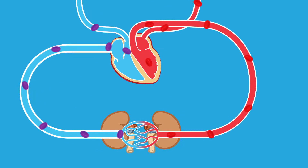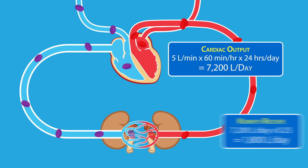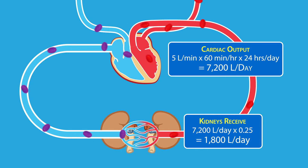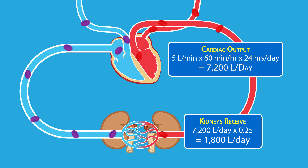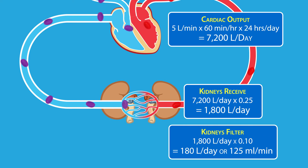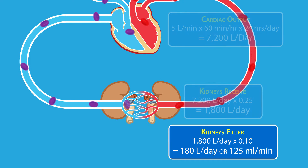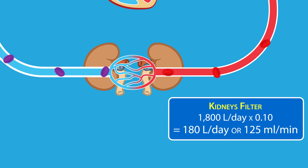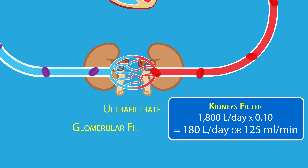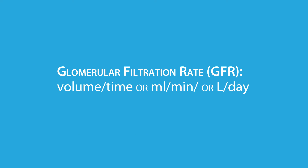The kidneys from an average adult receive roughly 25% of the cardiac output, which means that about 1800 liters of plasma flow through the kidneys every 24 hours. Of that 1800 liters, the kidneys filter about 10%, or 180 liters per day, or 125 milliliters per minute. The filtrate is often referred to as the ultrafiltrate or glomerular filtrate, and the rate at which the filtrate is formed is referred to as the glomerular filtration rate, or GFR for short.